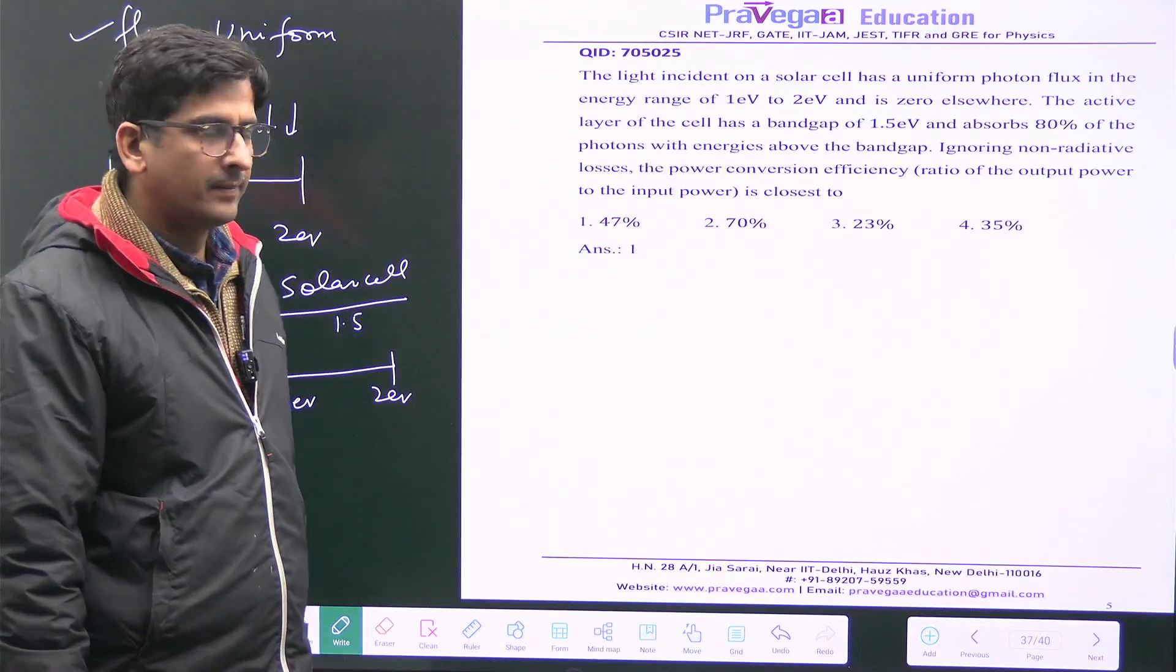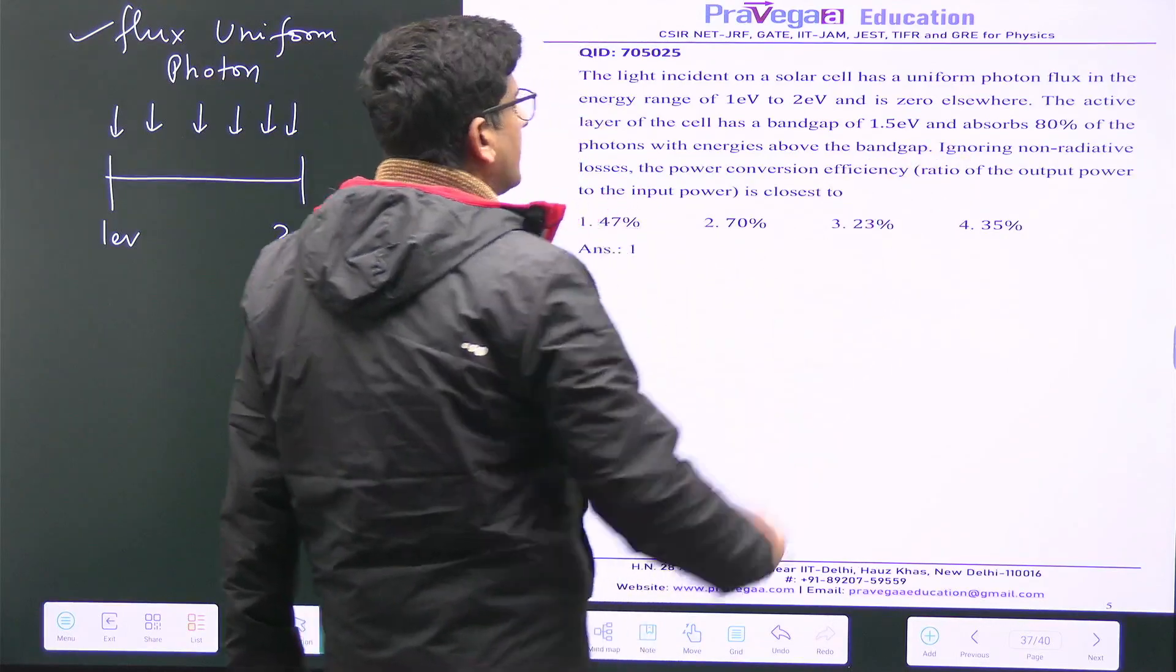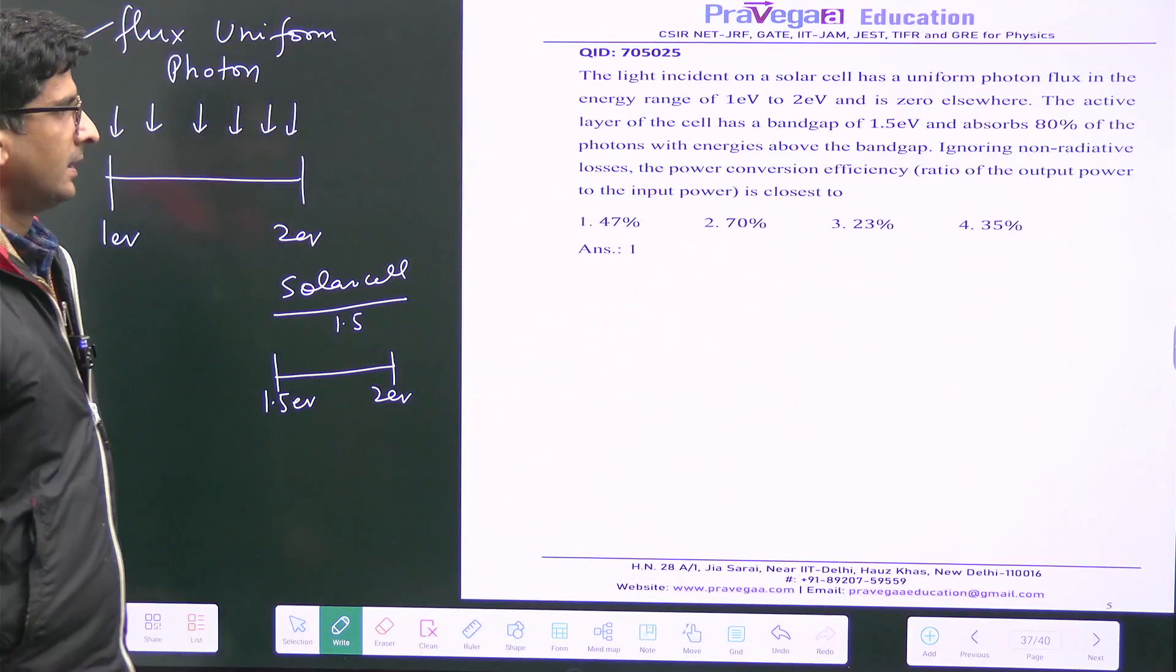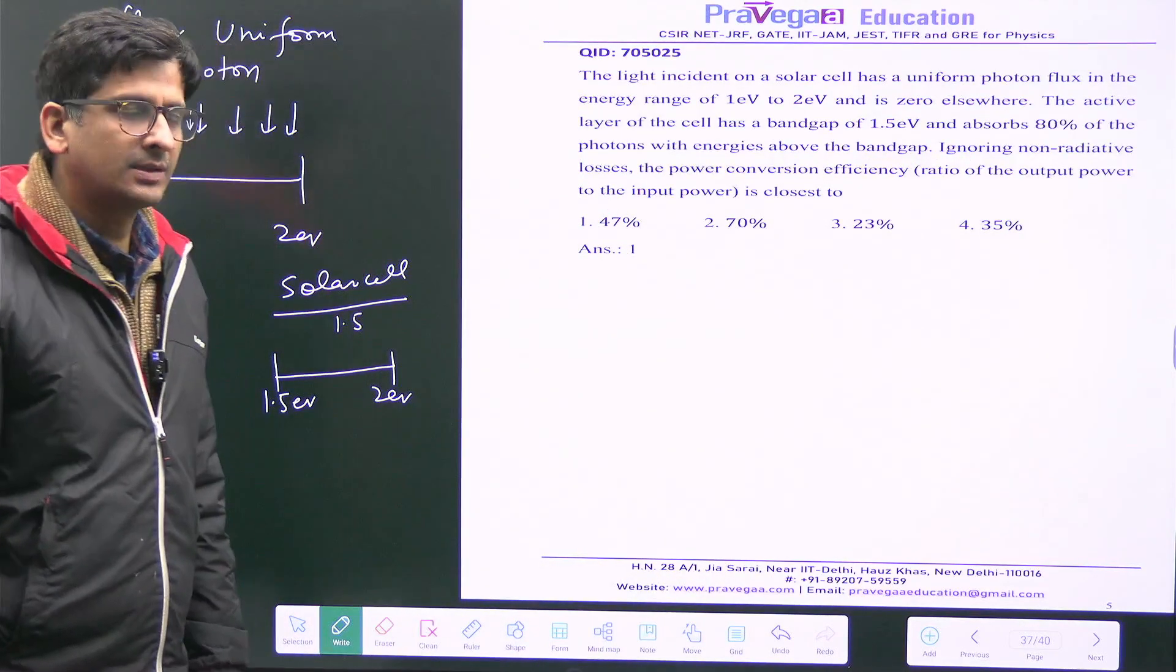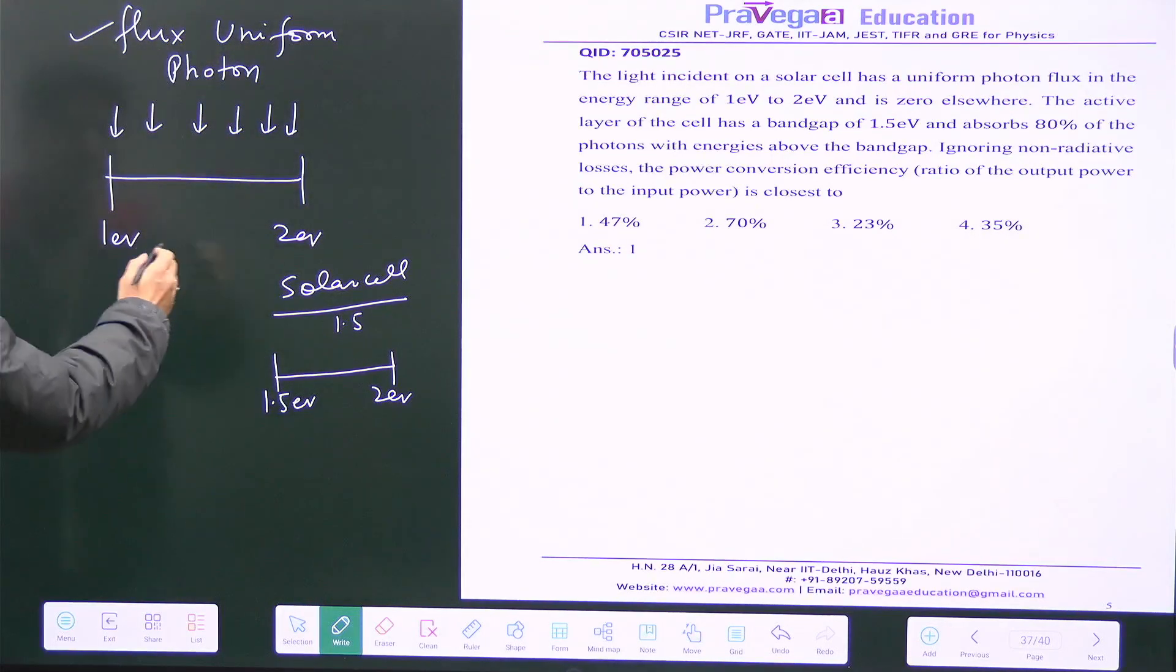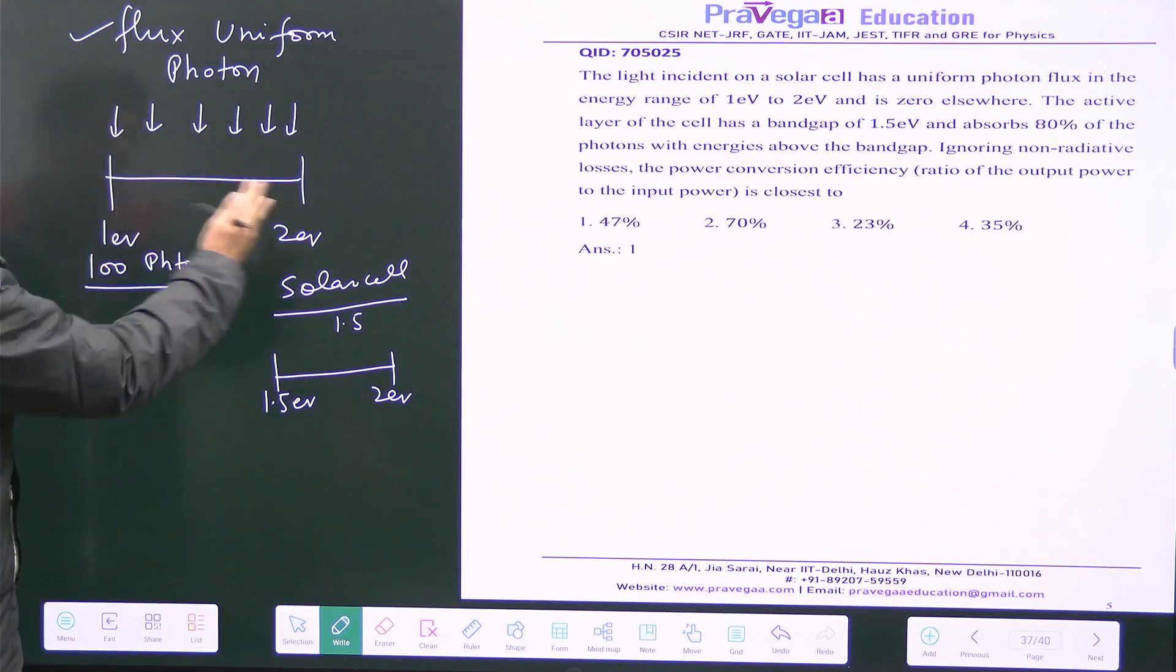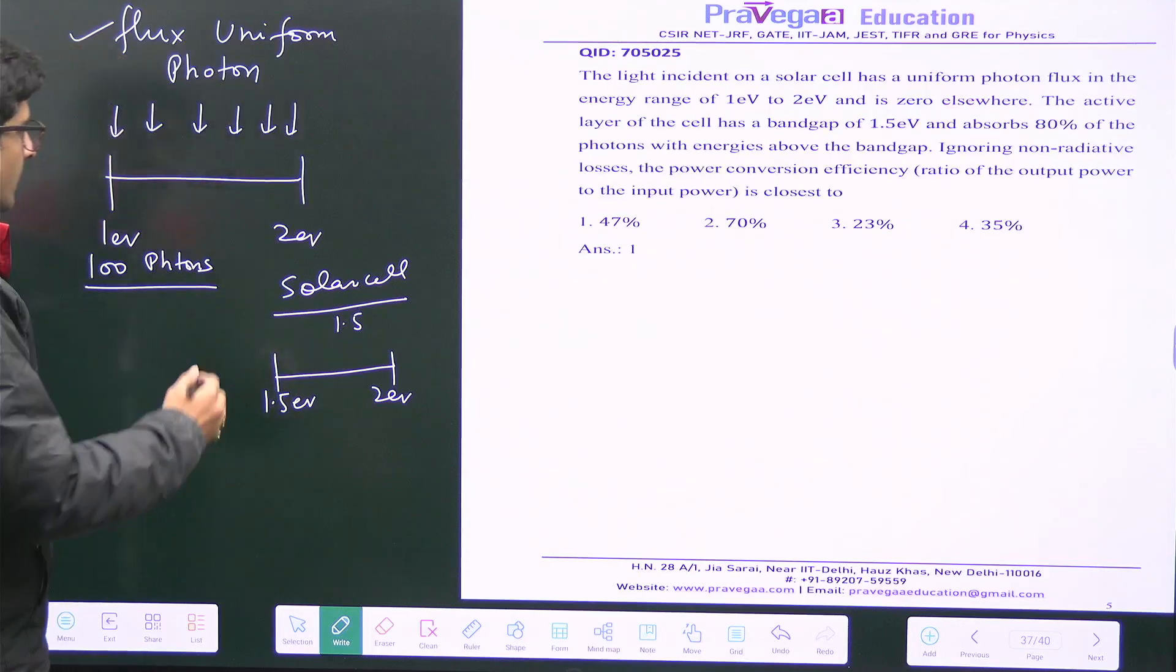They have given that the absorption is only 80 percent. So we have to calculate the power conversion efficiency. Let us see how to do it. I will take suppose hundred photons are coming with equal distribution.